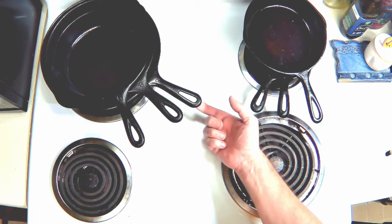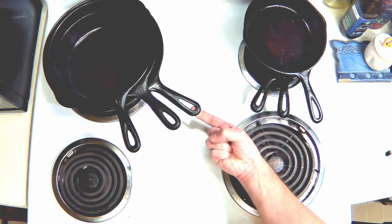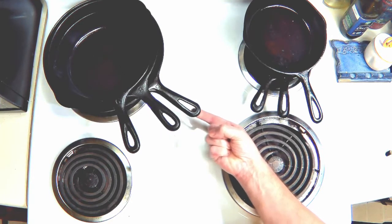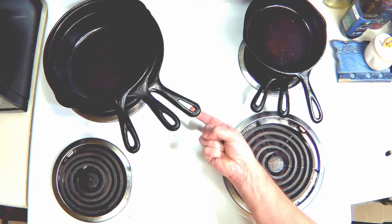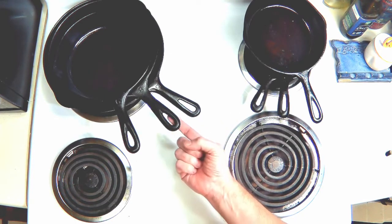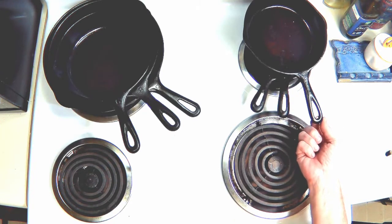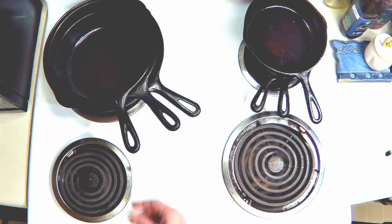If I were to jump over to this Griswold here and use a weaker finger, it has a tendency to want to pull off. So these are two real big clues as to whether or not you have a Griswold or a Wagner. Here's that pocket - all of the Wagners are going to have that little pocket, marked or unmarked.